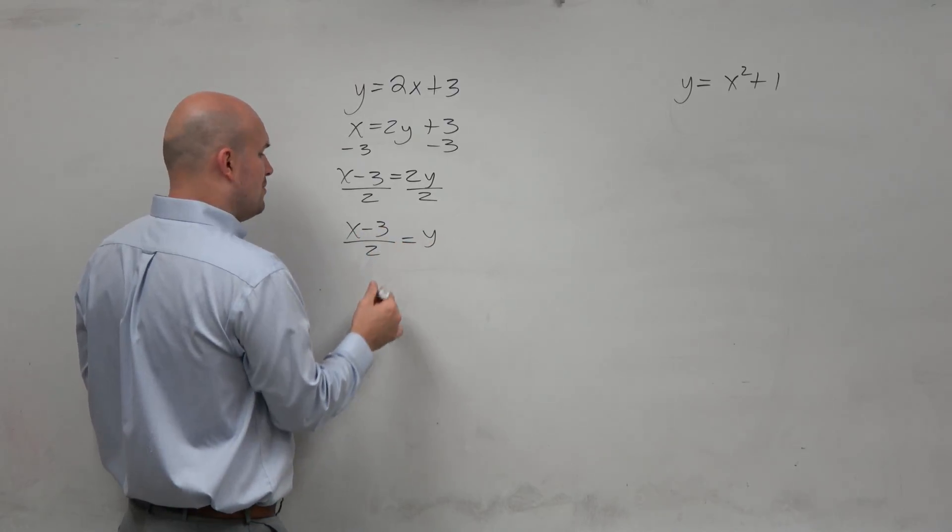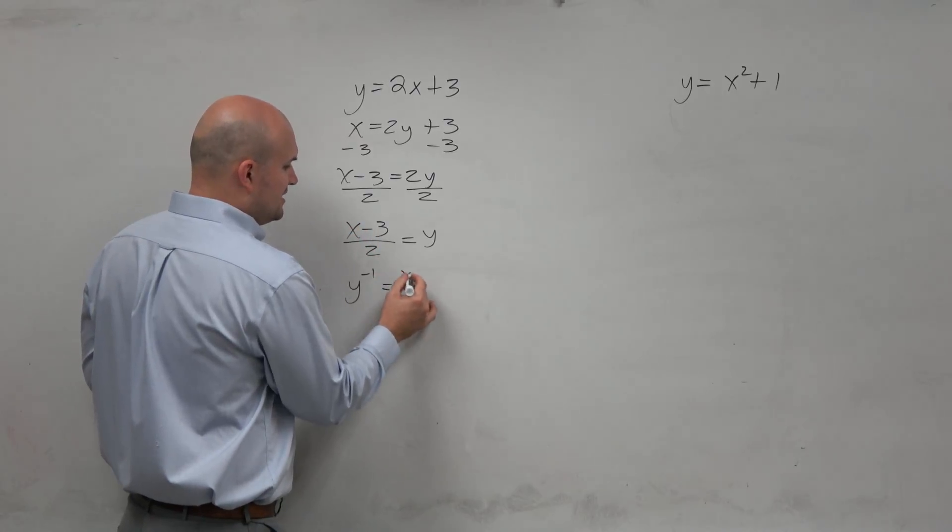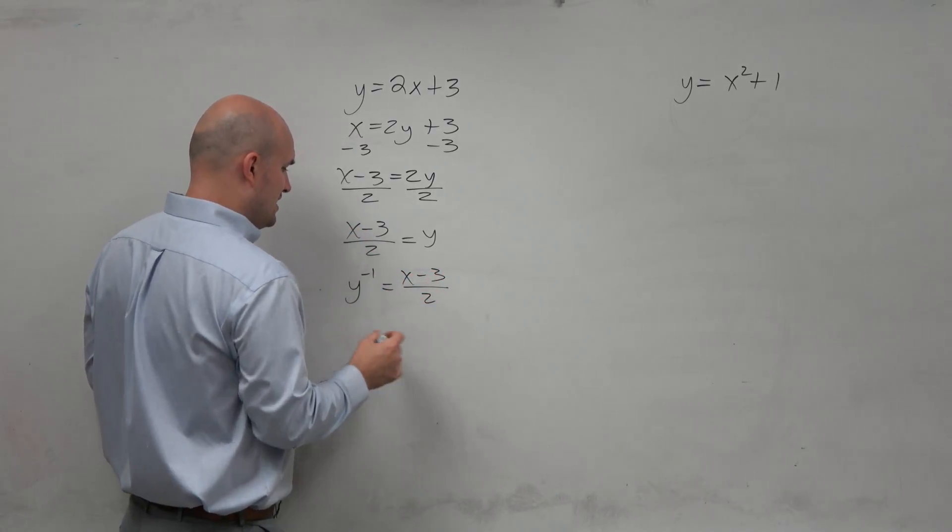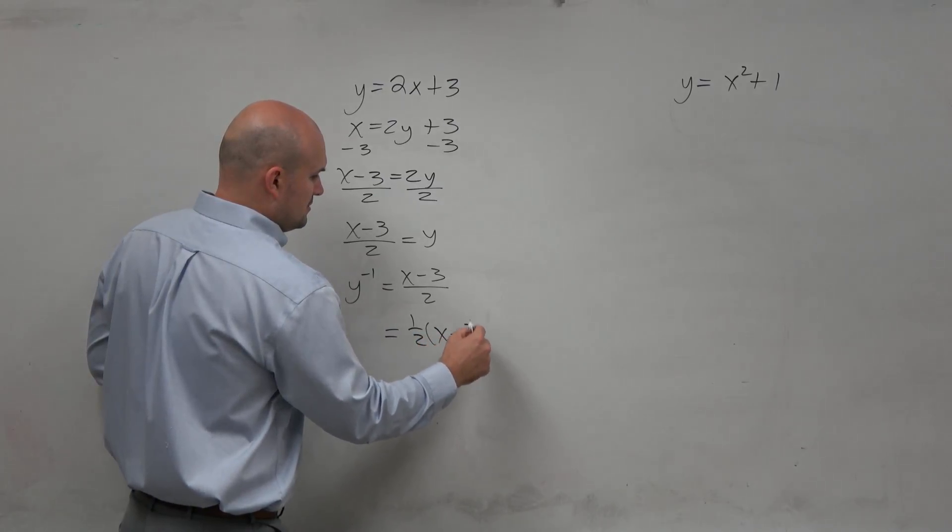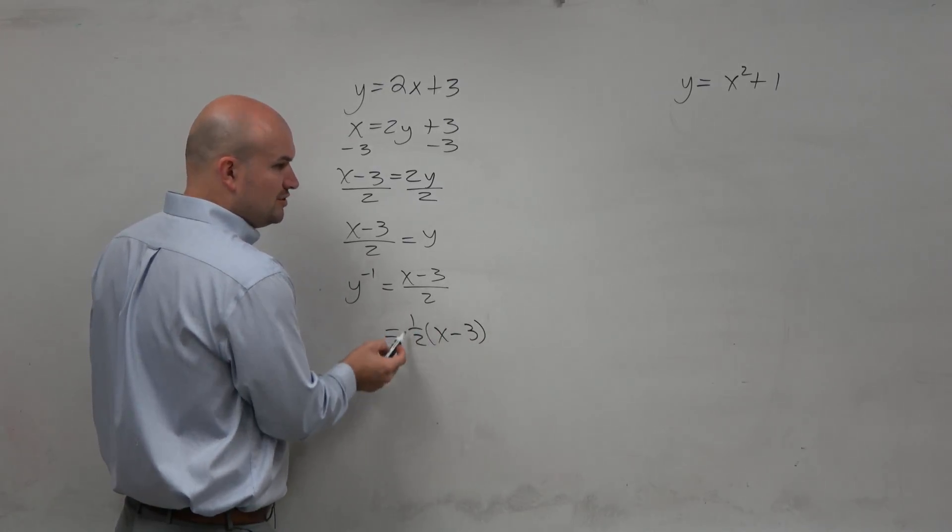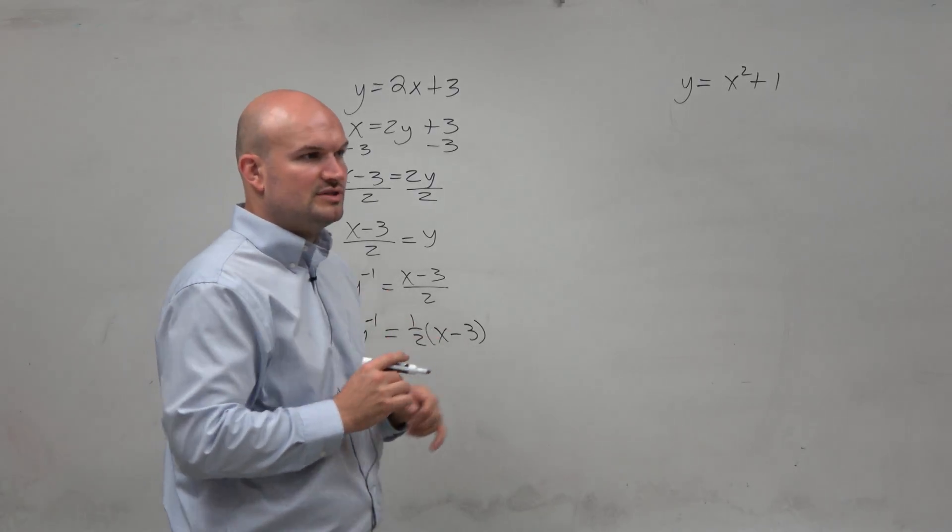Now that I've solved for y, I want to use inverse notation - y to the negative 1. You could leave it like this. However, on a multiple choice exam, it might be written differently. Instead of dividing by 2, you can multiply by 1/2. Those are equivalent, so don't be confused if you see different notation.